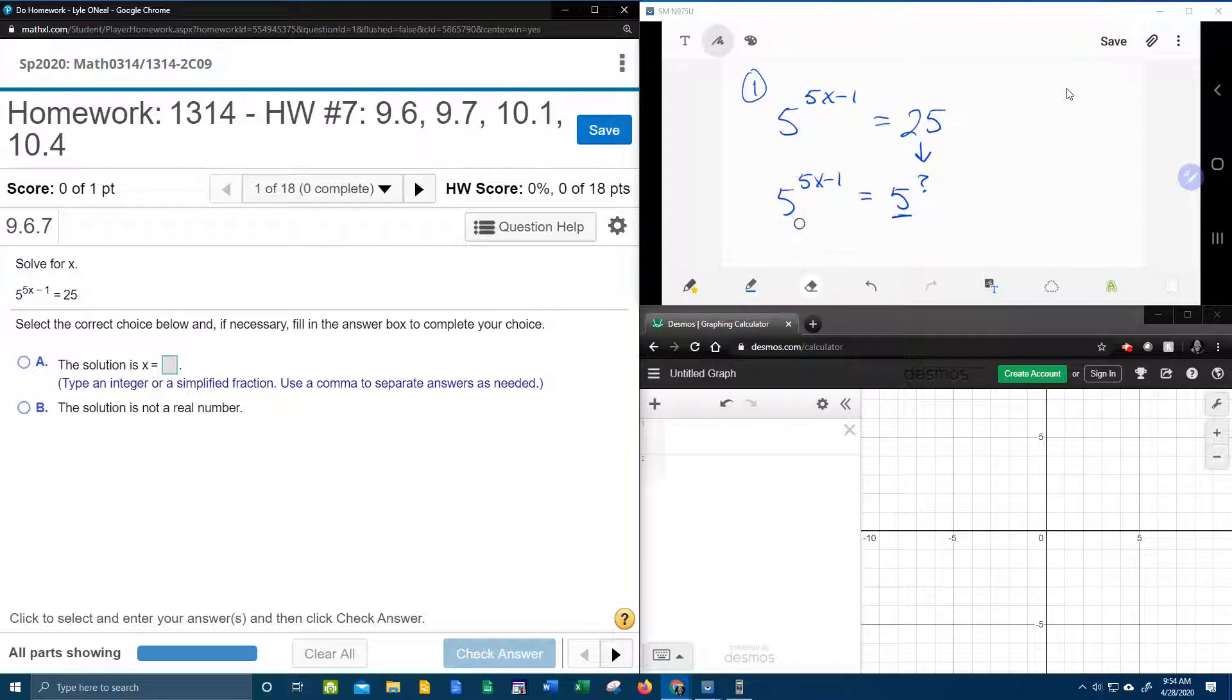Well the answer to that is 2, because 5 squared is 25. And then here's the cool part, once the bases match, they cancel.